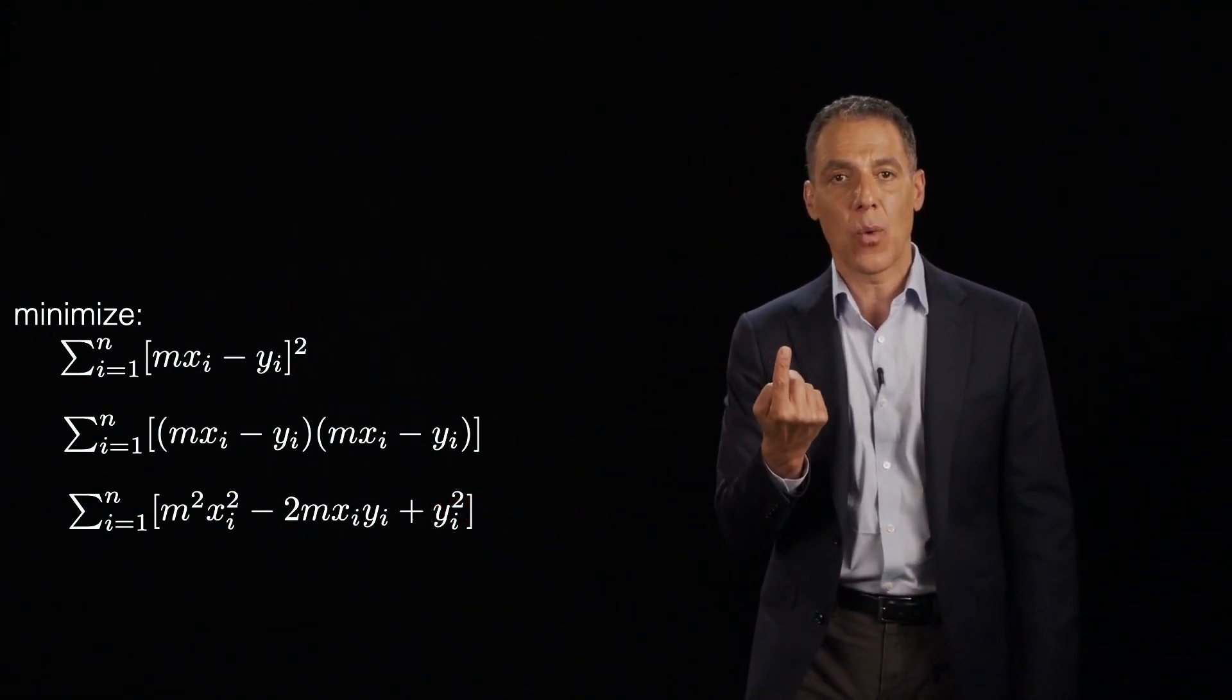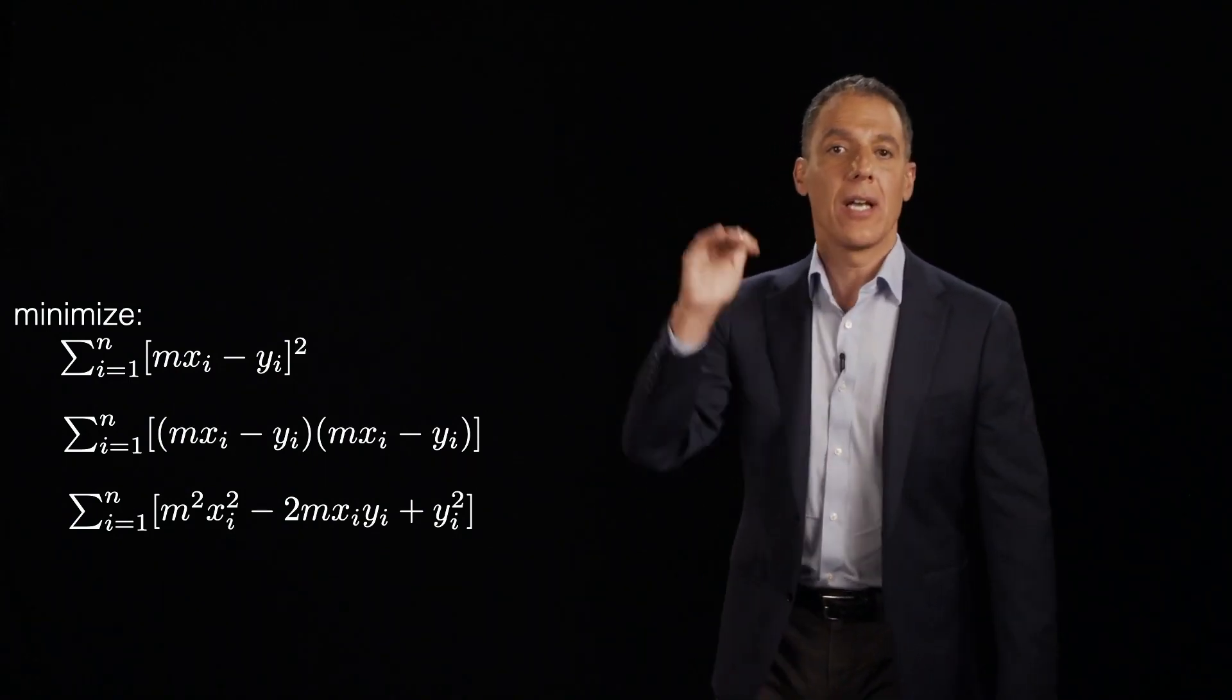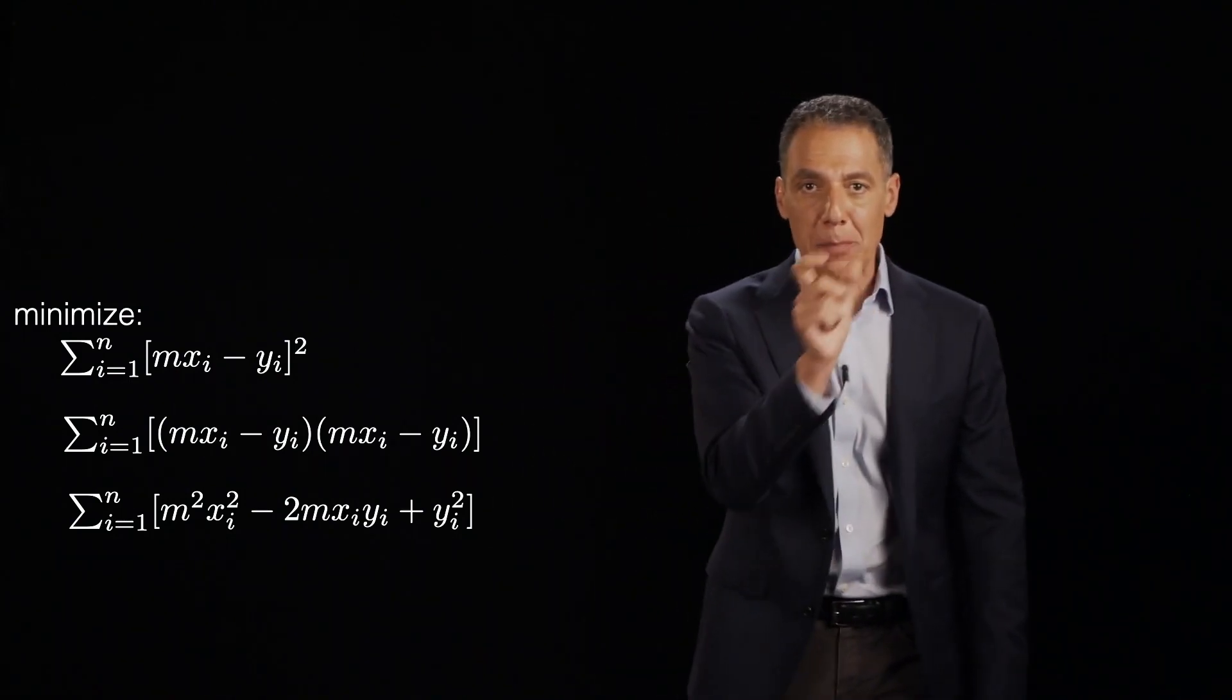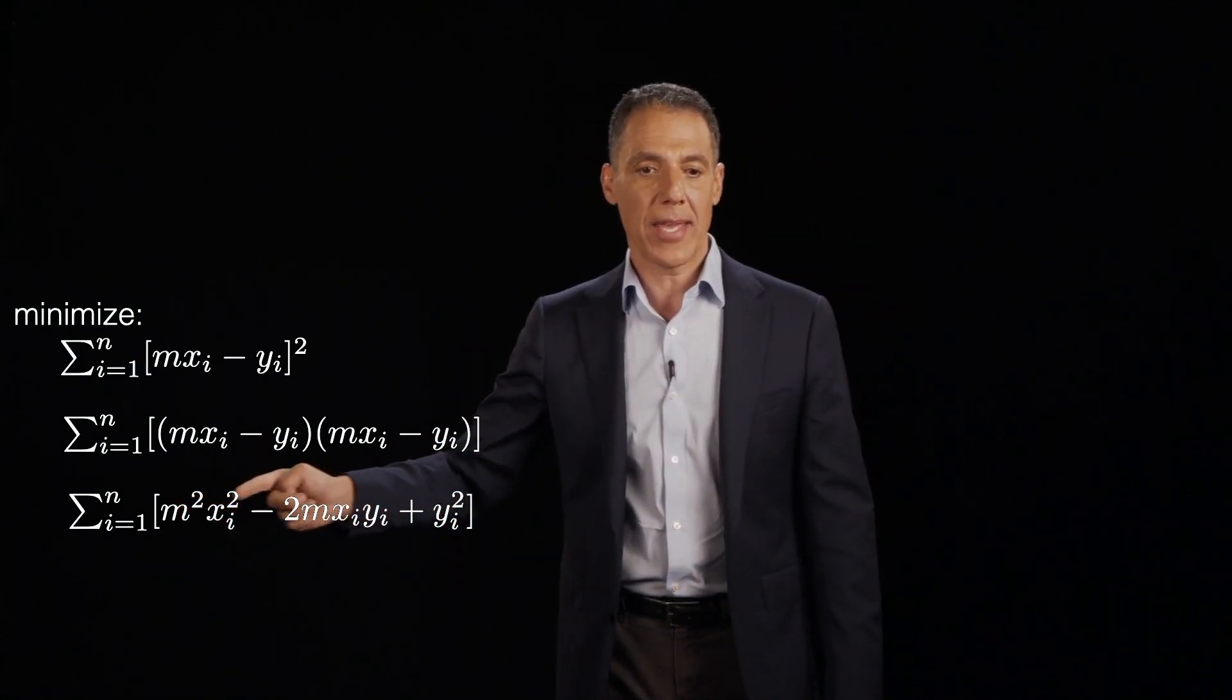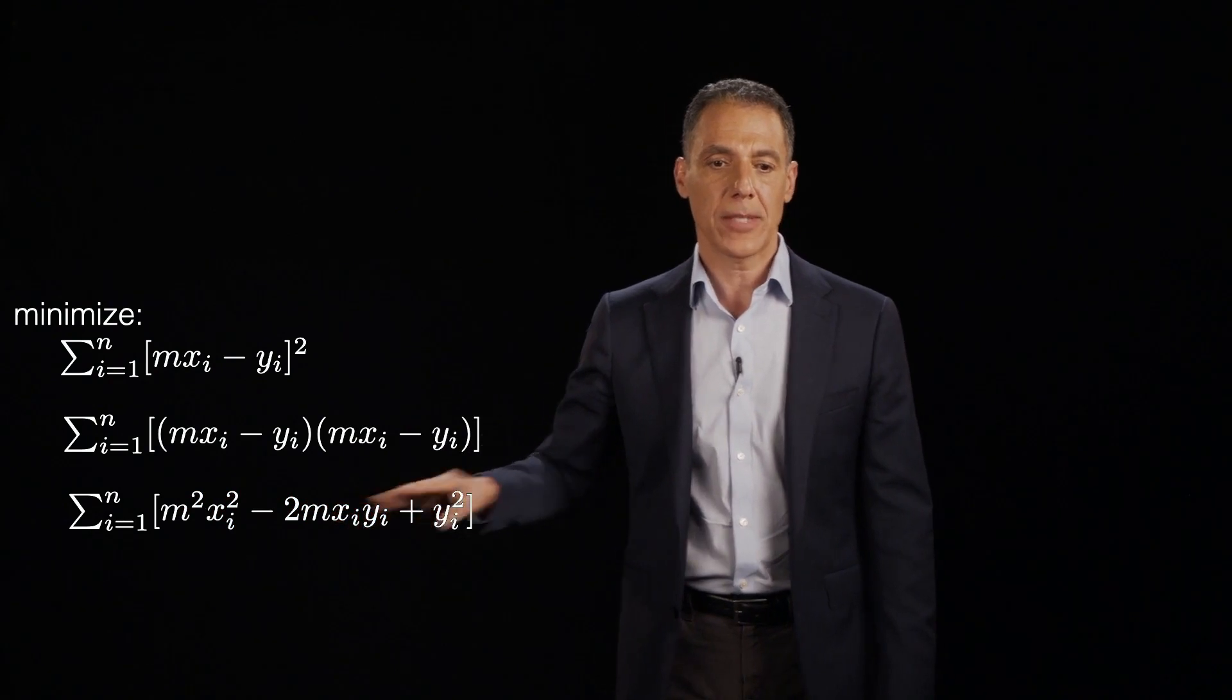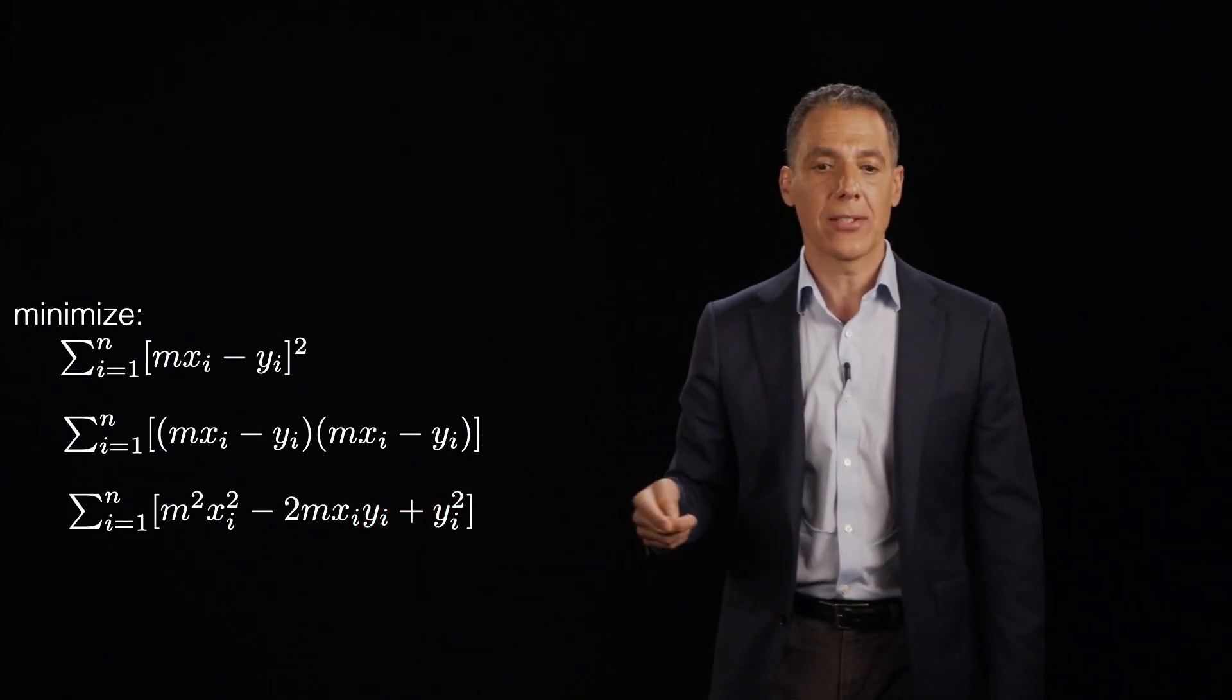Again, that i is the index on what? Each point in your supervised learning data set. I've given you those pairings of xi yi and I'm trying to solve for m, the slope. By the way, notice there's an m there and there's an m there. And of course we're summing up over all the i's. Okay, so let's unpack that summation.